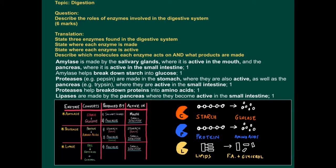Finally, lipases, just think of liposuction, like to do with fats. Lipases are made by the pancreas, where they become active in the small intestine, just like trypsin, just like amylase.